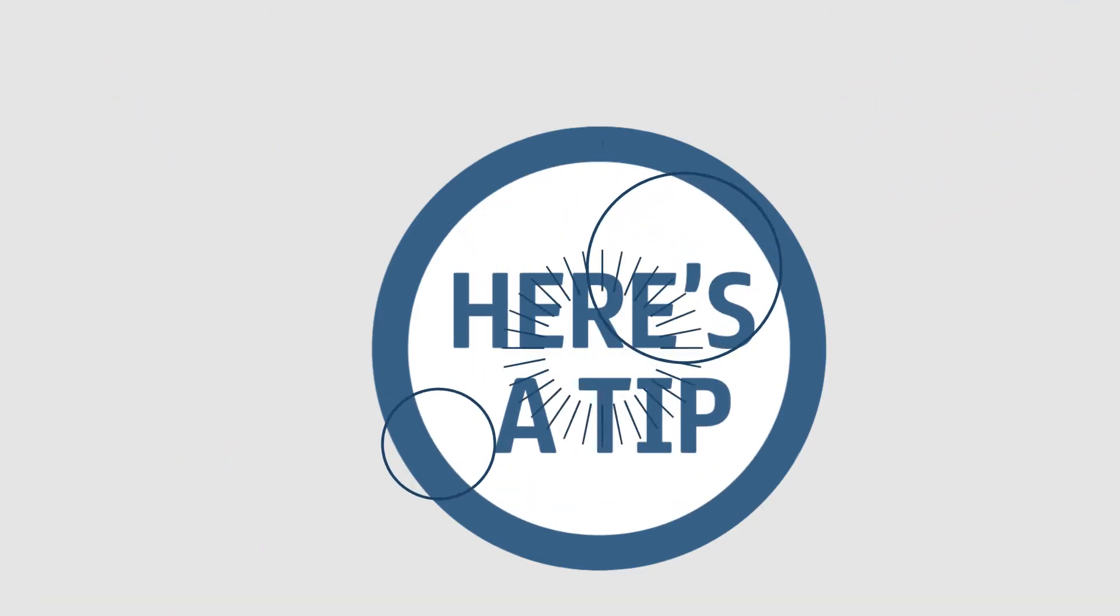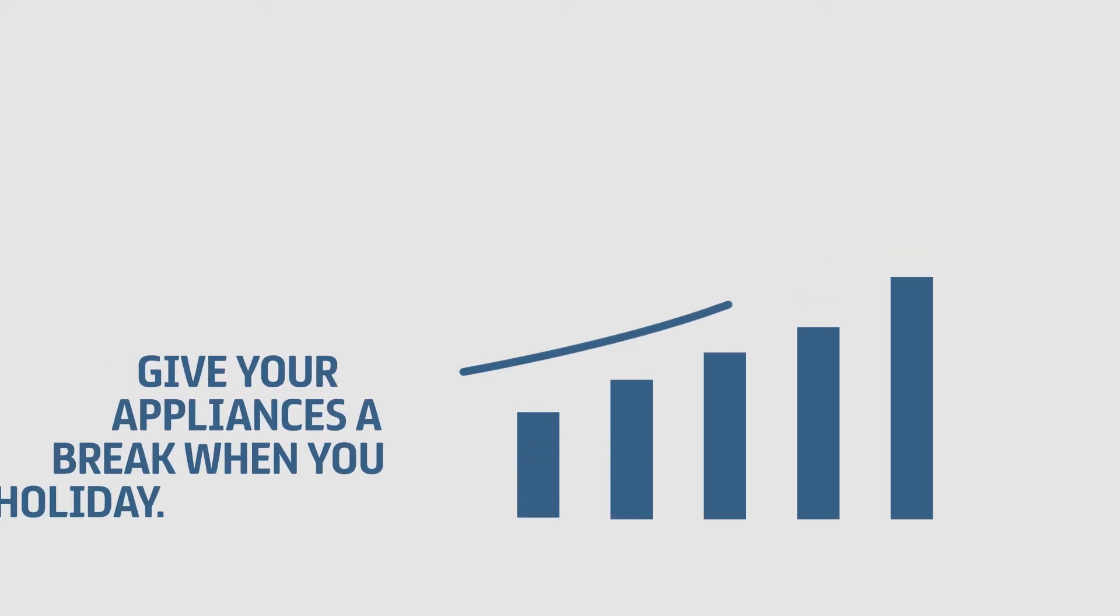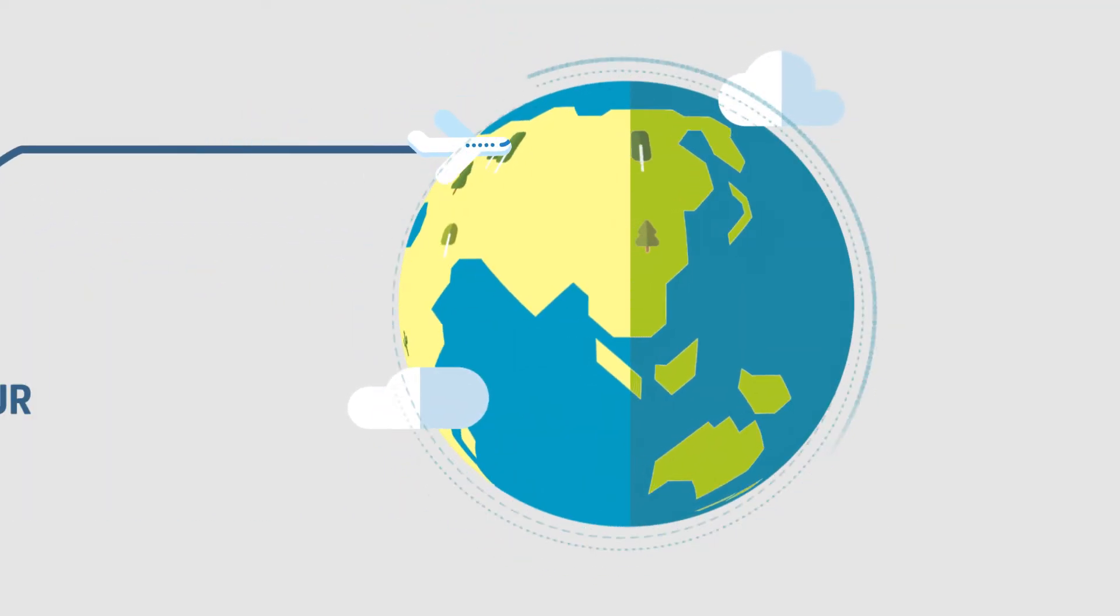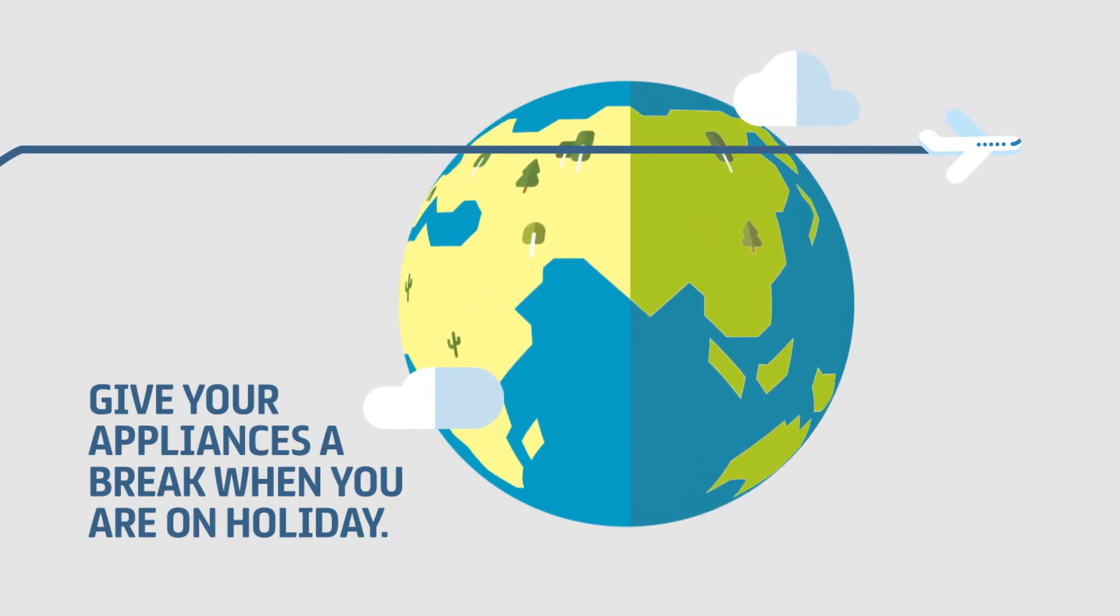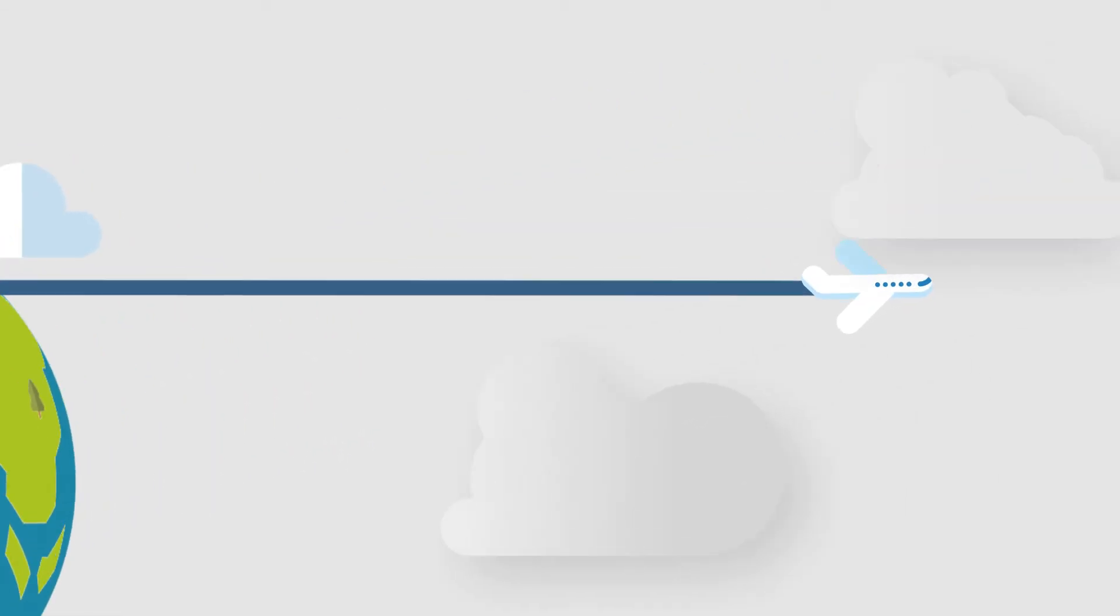Here's a good tip. Monitor your consumption by referring to your consumption graph in your green bill. And if you're traveling, deactivate any appliances that are not in use to save on consumption.